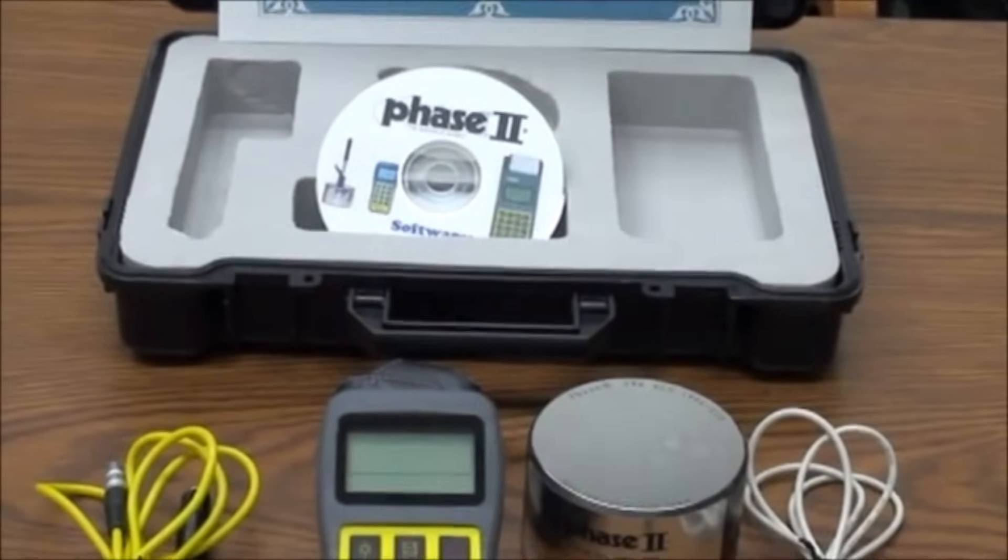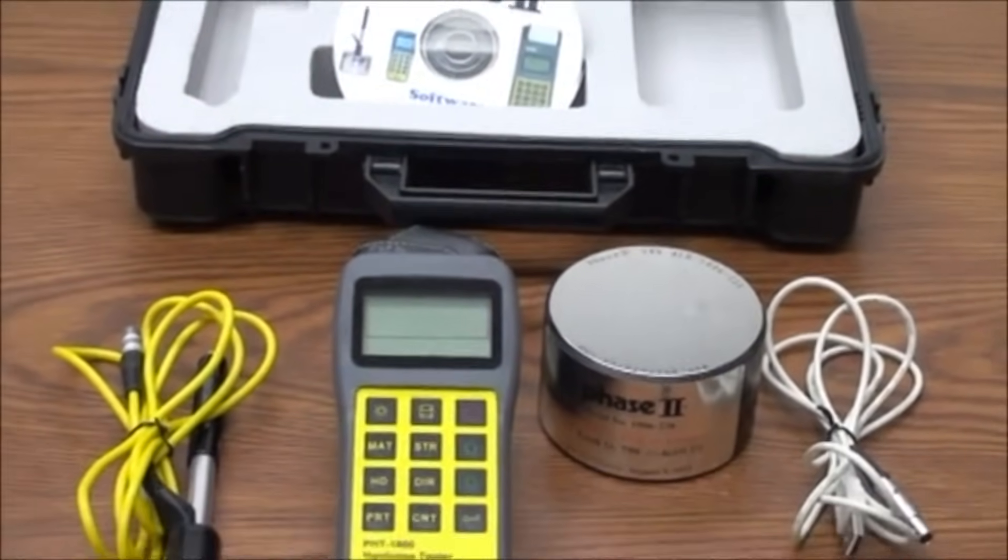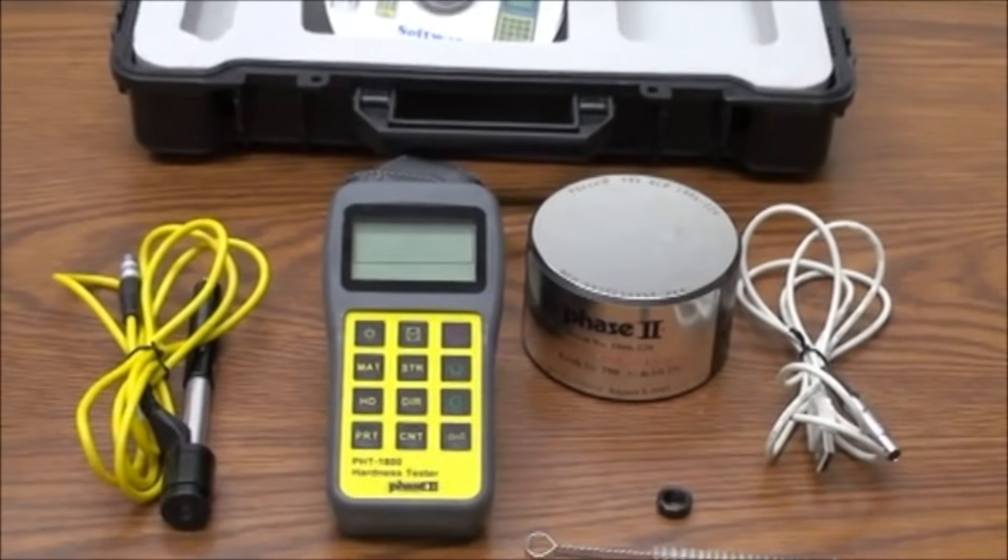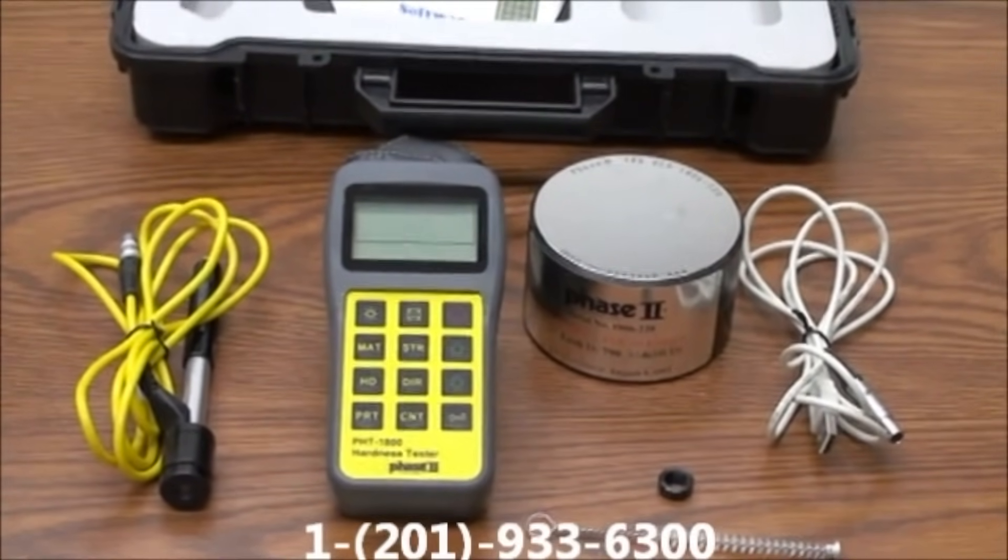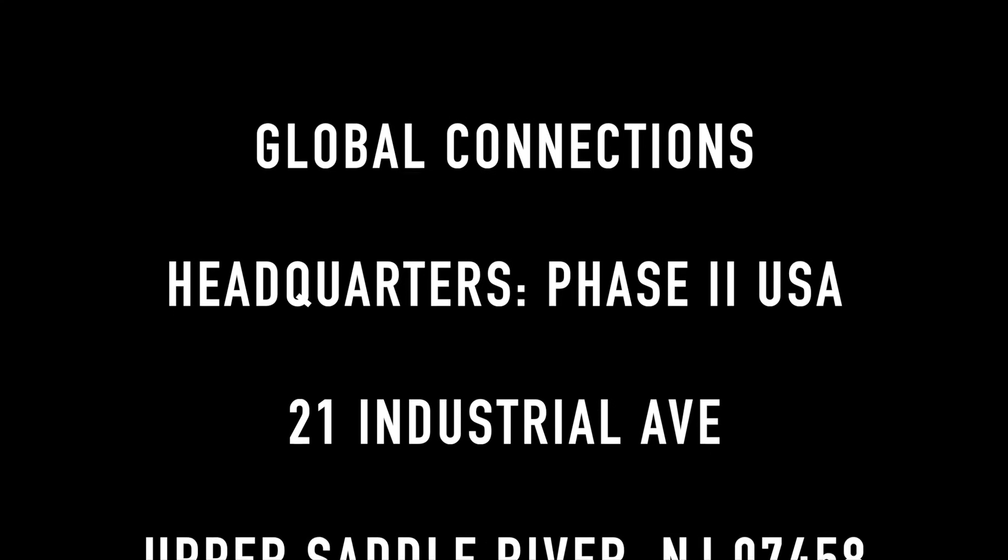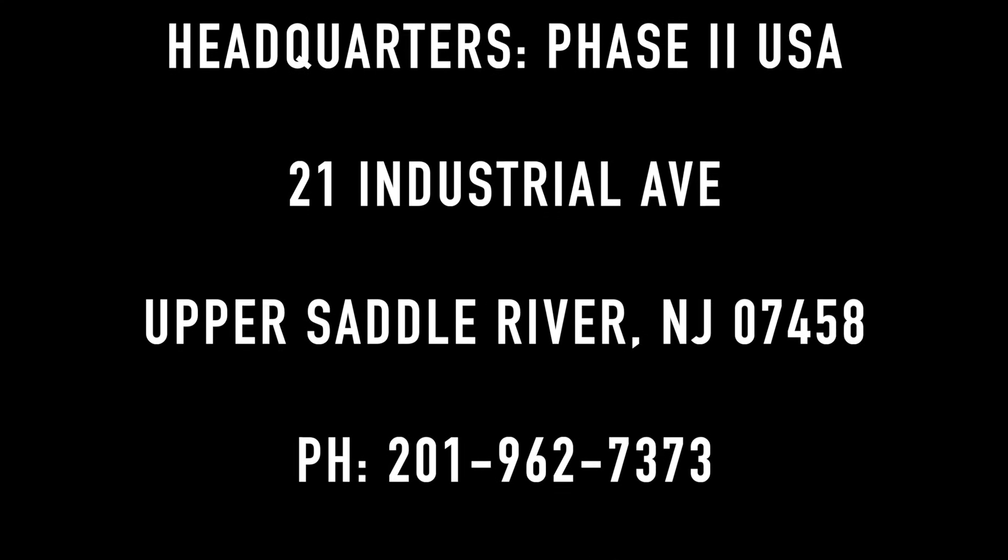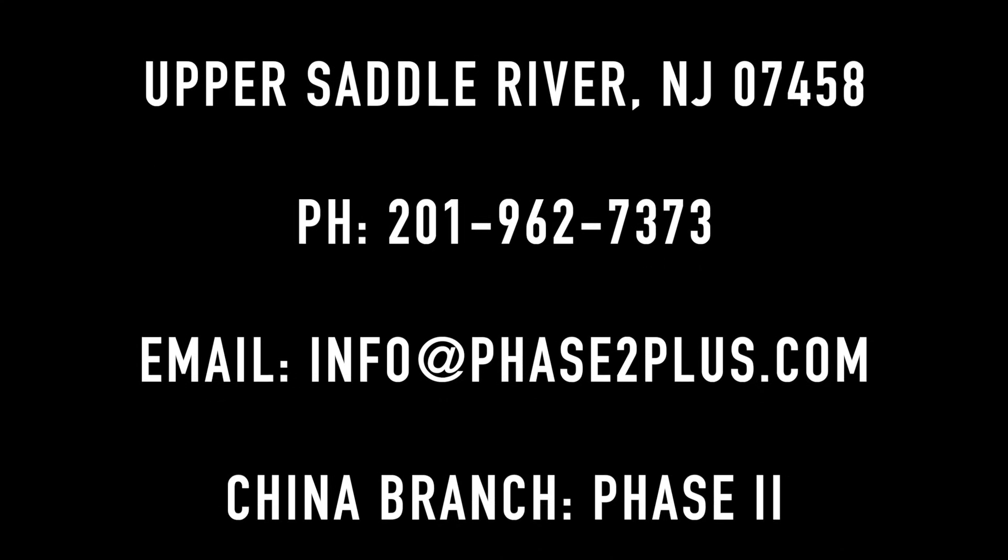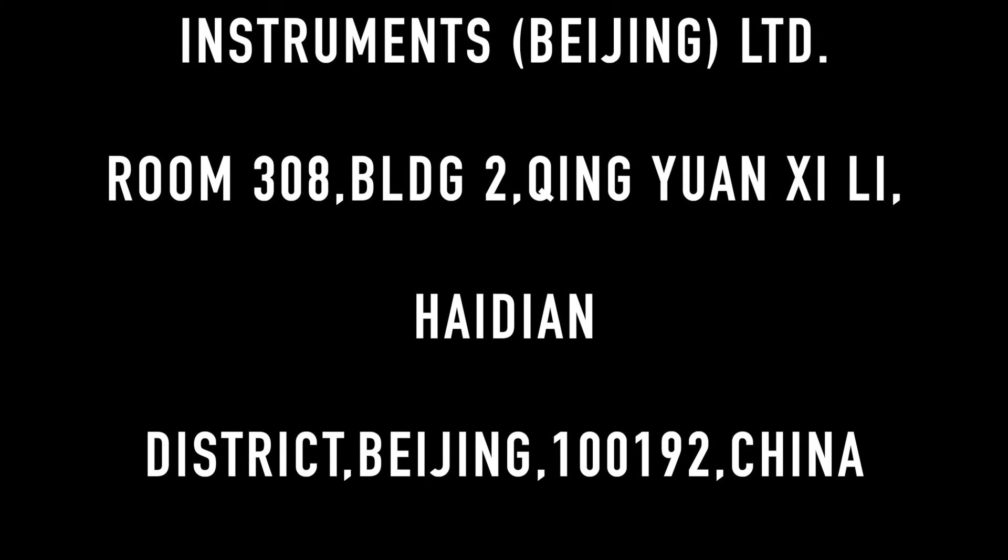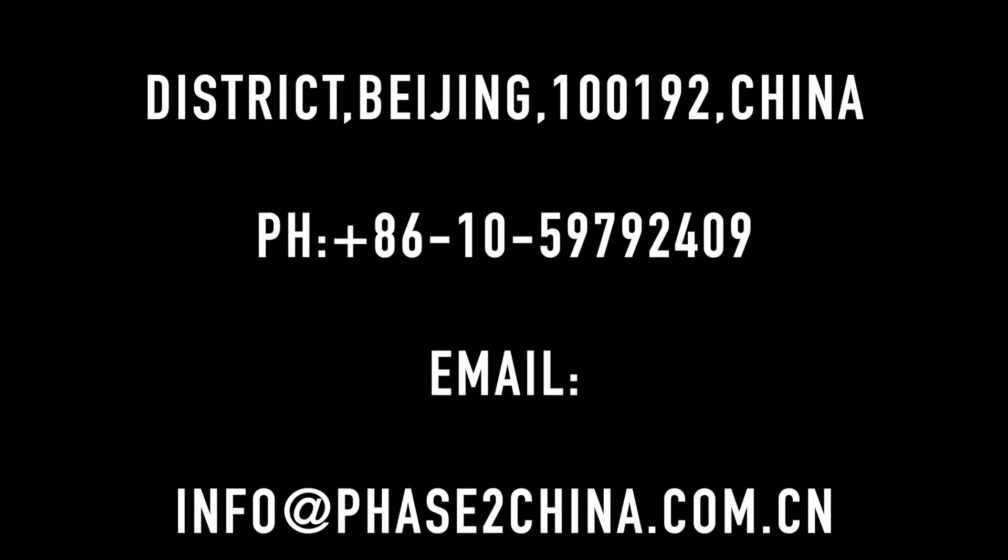This concludes our application and function guide for the Phase 2 PHG 1800 Portable Hardness Tester. Should you have any questions, please do not hesitate to contact us at 1-201-933-6300.